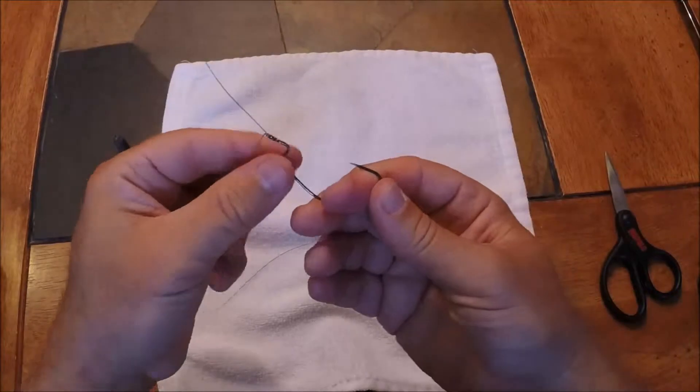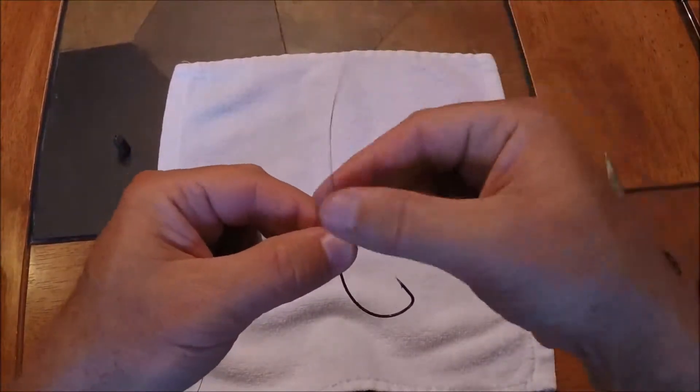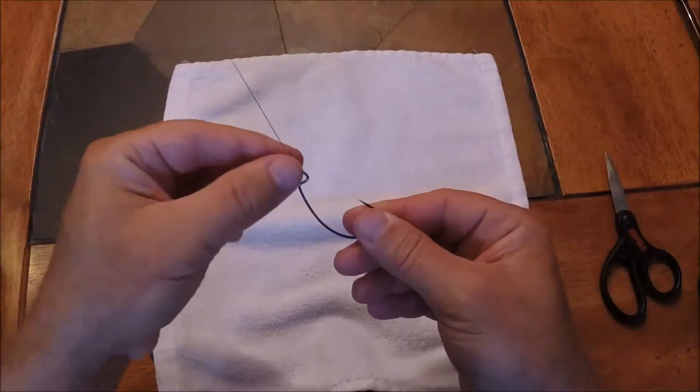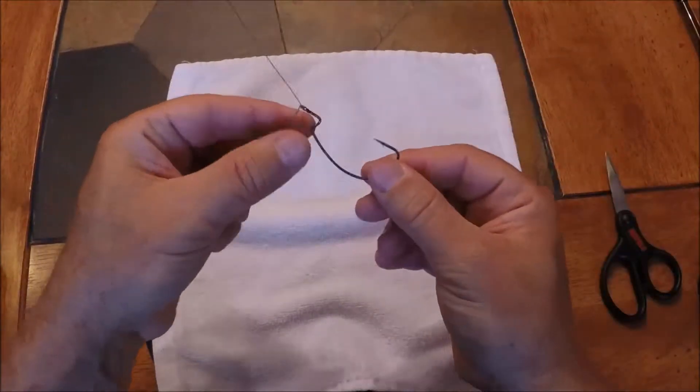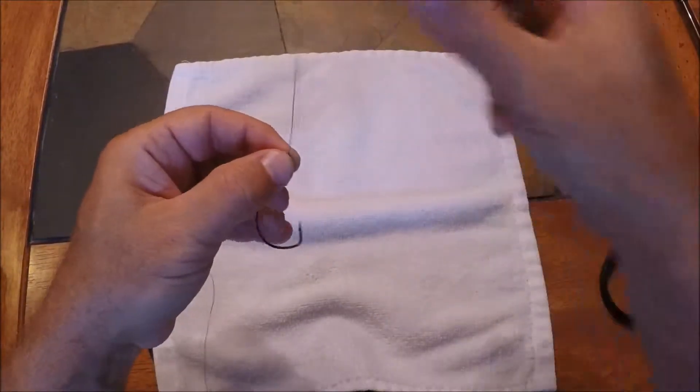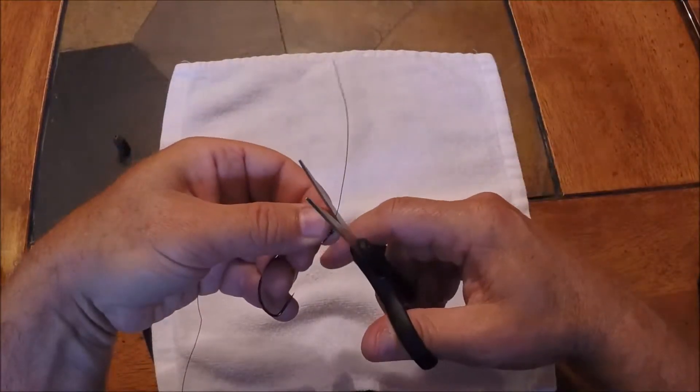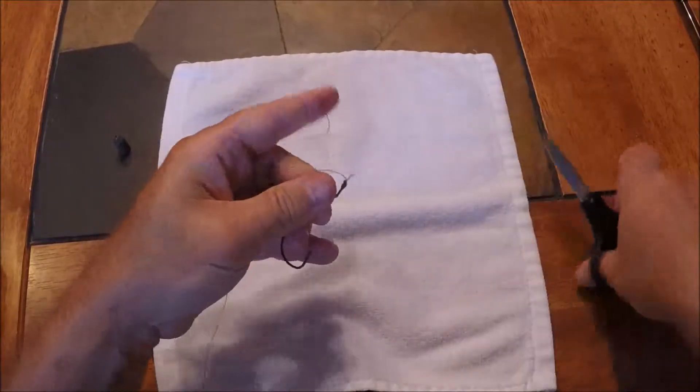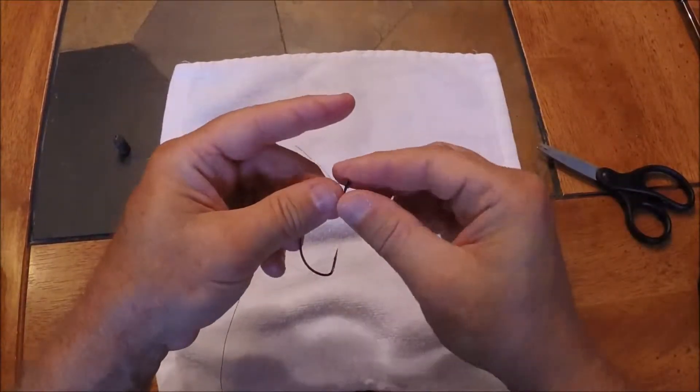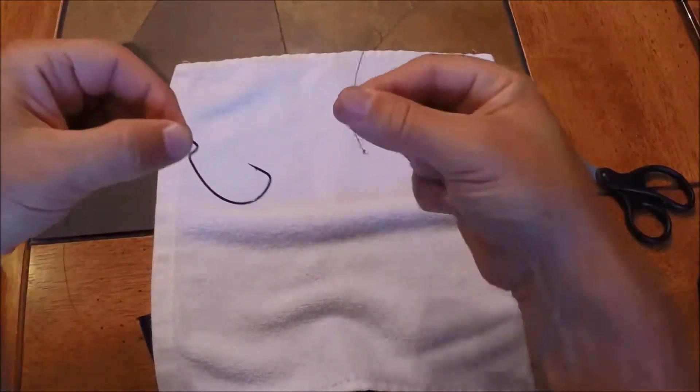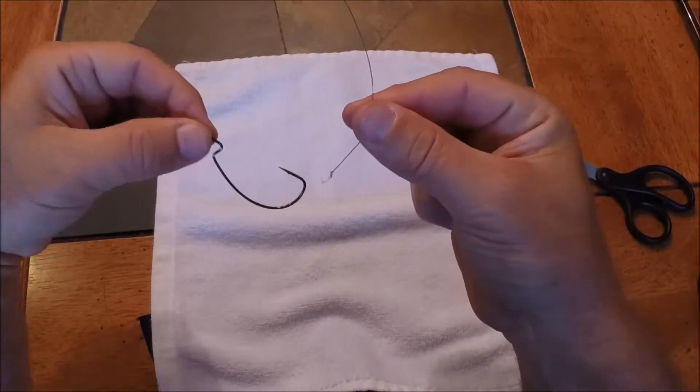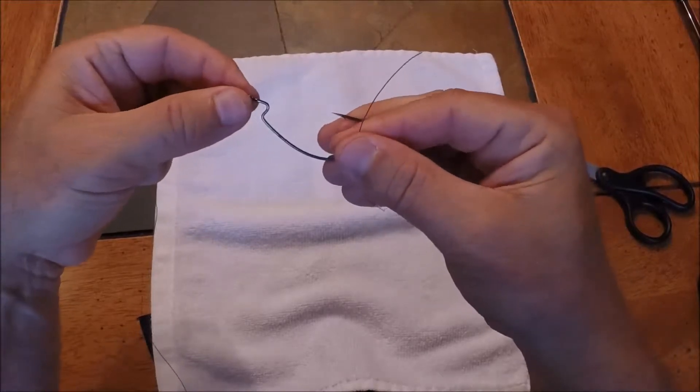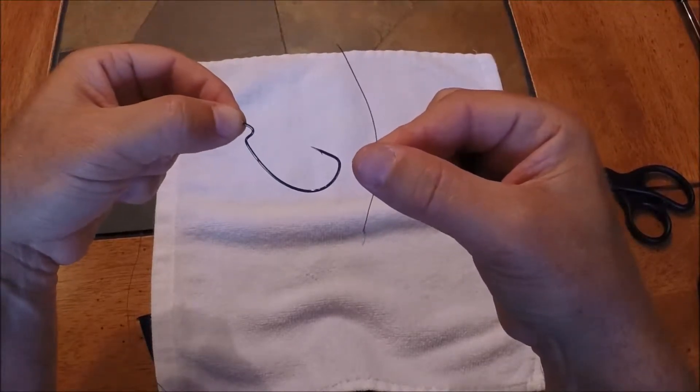Now one disadvantage of a Palomar knot is this long tag end. If I'm trying to tie on to, let's say, a spinner bait, I have to make that loop big enough to go all the way around the spinner bait. Once you have this tag end, obviously I'm going to cut it off, but one disadvantage of a Palomar is that every time I'm cutting off two, three, four inches of line, after a month or two months' time I'm really greatly reducing the amount of line on my reel.